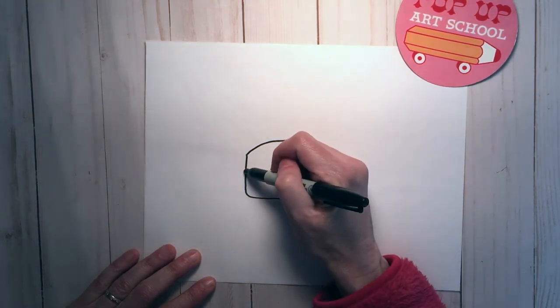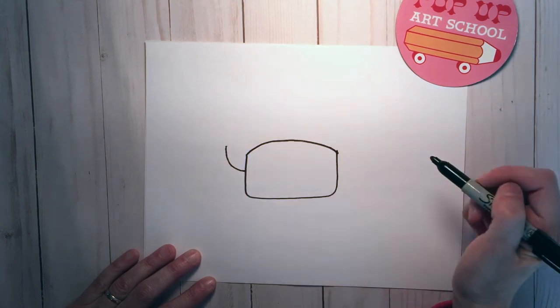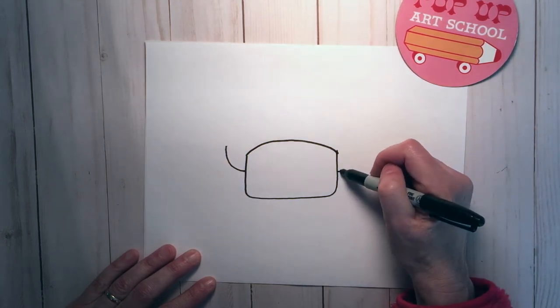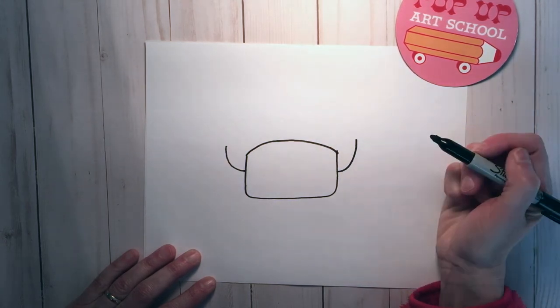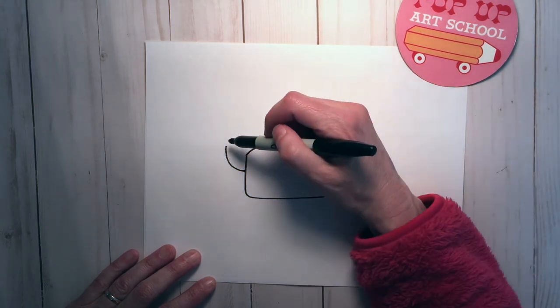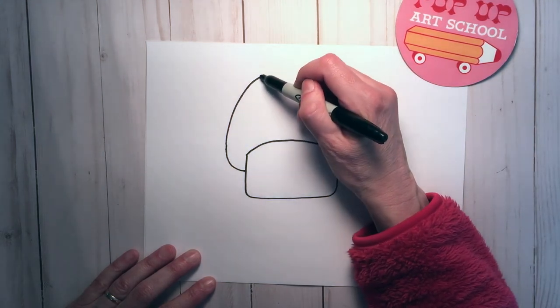On the side do just a little hook and same on the other side. We're going to connect those two hooks with one big round curve.